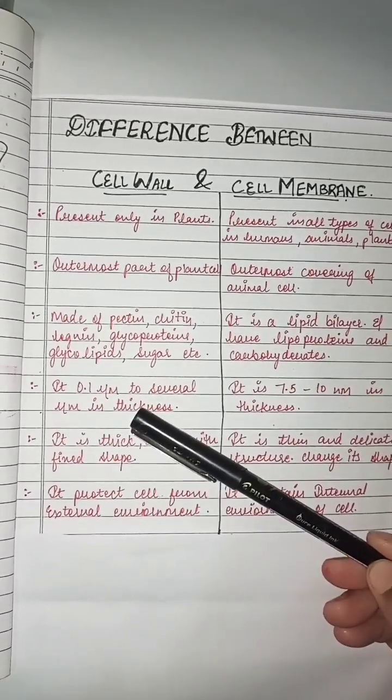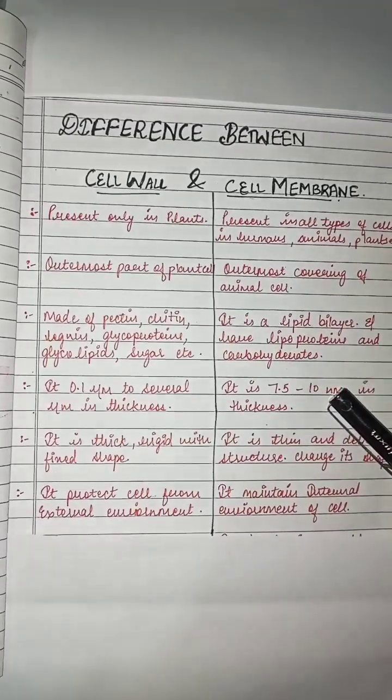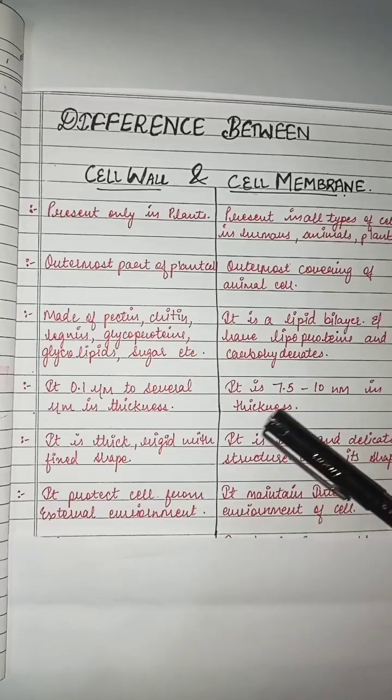...several micrometers in thickness, whereas the cell membrane is 7.5 to 10 nanometers in thickness. The cell wall...